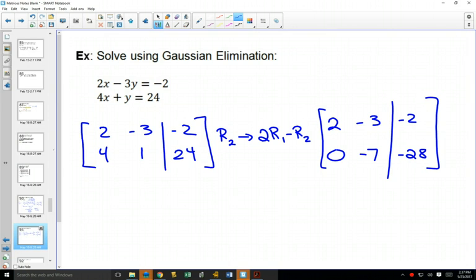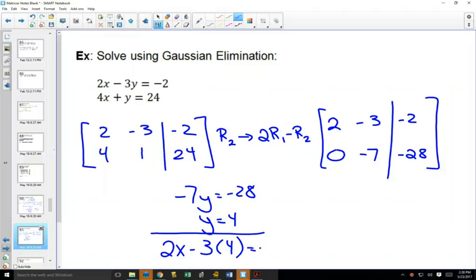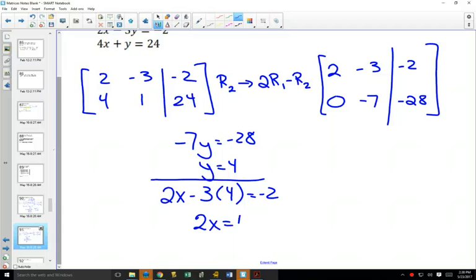You see how you might mix up things a little bit with adding and subtracting? Now that we've got a zero here, we have a row echelon form. We can say I know that negative seven y is equal to negative 28, so y is equal to four. If y is equal to four, I know from my first equation that two x minus three y has to equal negative two. That means two x is equal to 10 and x is equal to five.